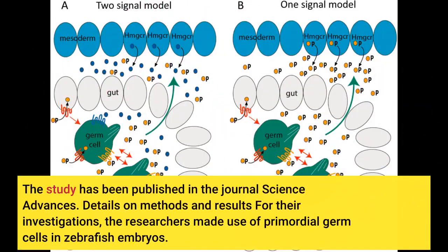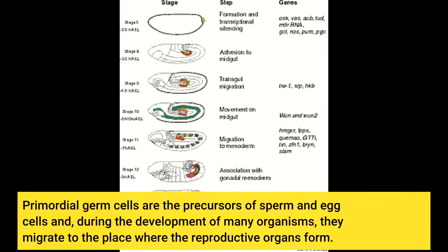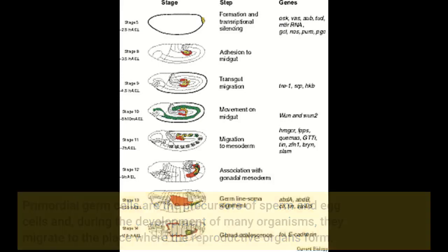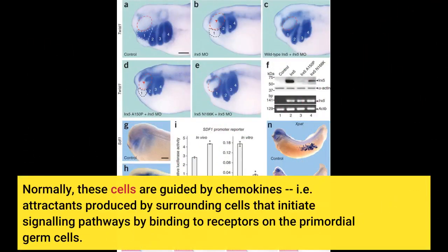The study has been published in the journal Science Advances. For their investigations, the researchers made use of primordial germ cells in zebrafish embryos. Primordial germ cells are the precursors of sperm and egg cells and, during the development of many organisms, they migrate to the place where the reproductive organs form. Normally, these cells are guided by chemokines — attractants produced by surrounding cells that initiate signaling pathways by binding to receptors on the primordial germ cells.